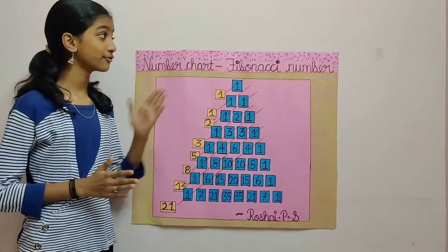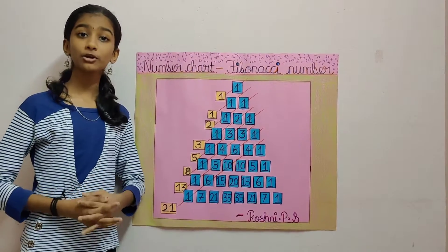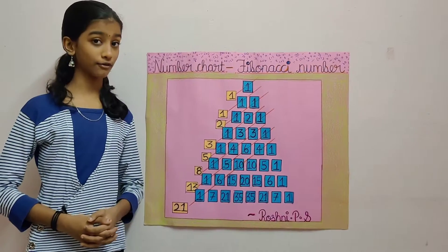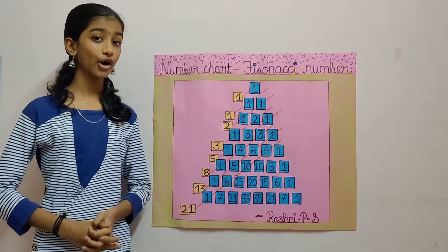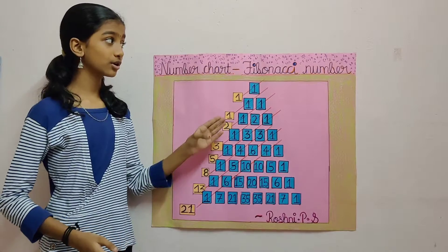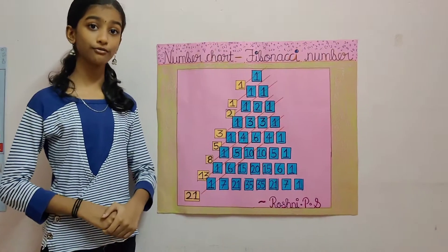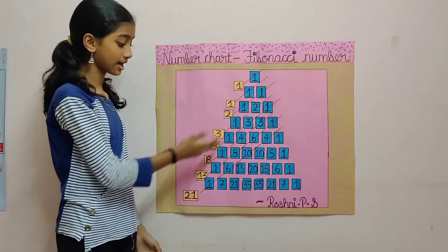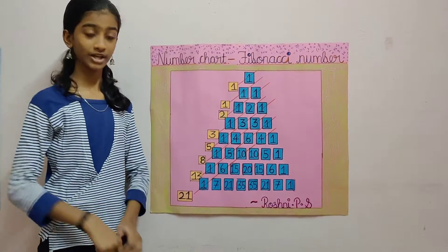Next, the Fibonacci number series. The Fibonacci number series is named after Leonardo of Pisa, known as Fibonacci. The Fibonacci number series can be derived by summing the elements in the rising diagonals of Pascal's Triangle.